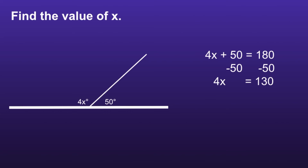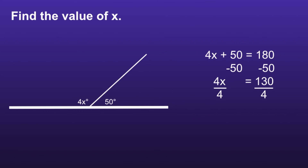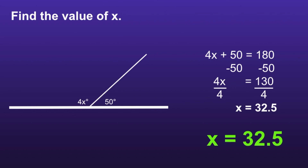The second thing we want to do is undo multiplication or division. Just like before, we have a number in front of the variable — this is a coefficient, or a number being multiplied by a variable. So we want to do the opposite of that. The opposite of multiplying by 4 is dividing by 4. 4x divided by 4 leaves us with x, and 130 divided by 4 is equal to 32.5. So x is equal to 32.5.